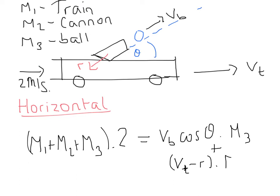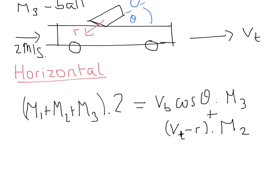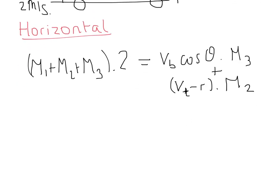Plus the velocity of the cannon is going to be the velocity of the train minus the recoil velocity. And that's going to be multiplied by M2, which is the mass of the cannon. So let's just move this up a bit. And obviously the final part to add to this will be the velocity of the train multiplied by the mass of the train.